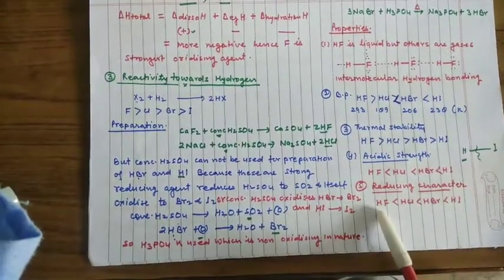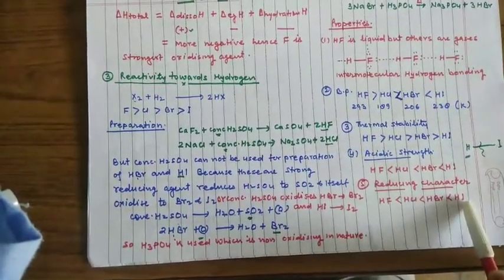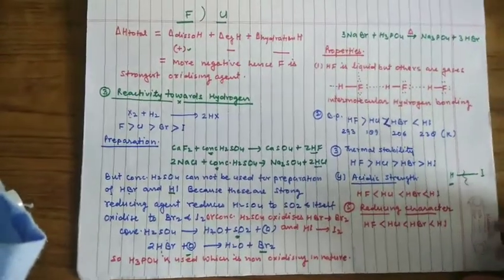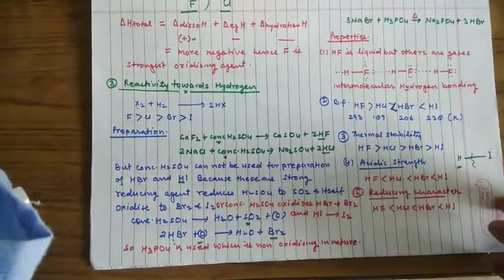For reducing character, on going down the group, reducing character increases. Because the bond strength is decreased, the bond is dissociated and it gives hydrogen.